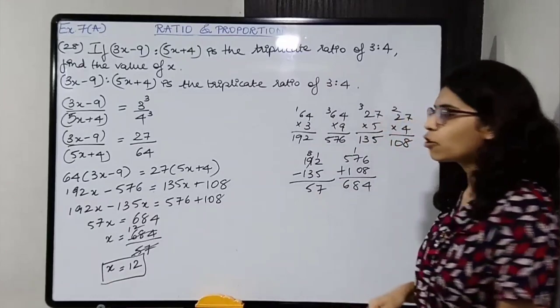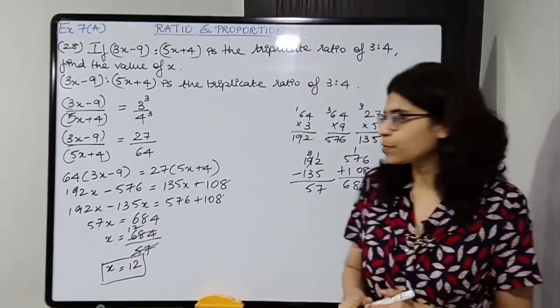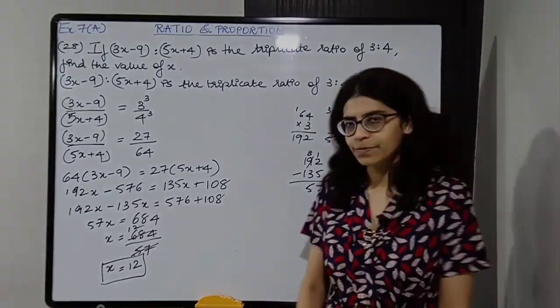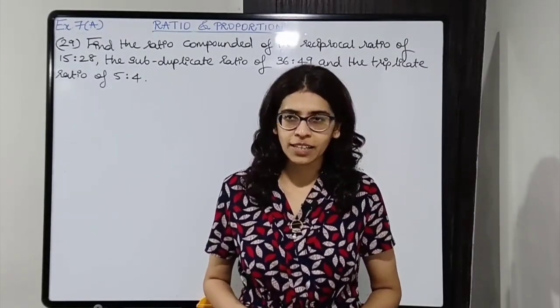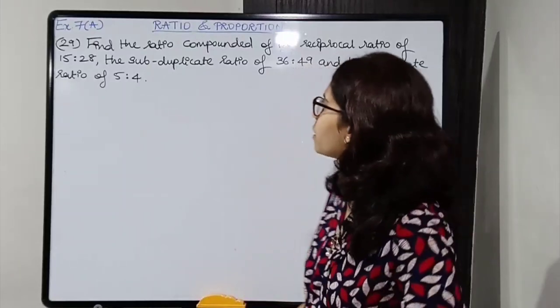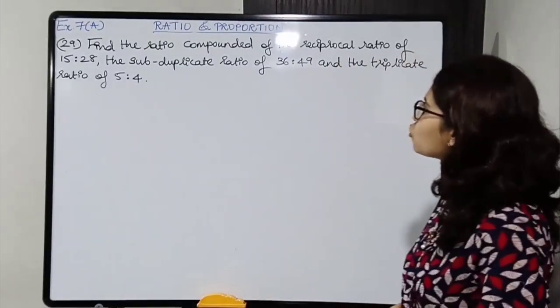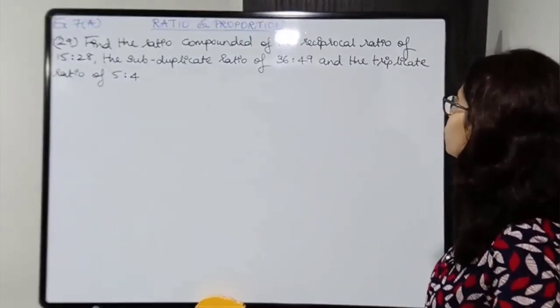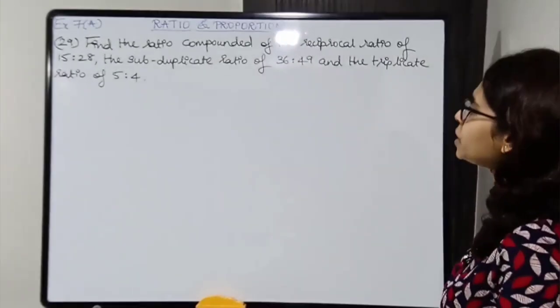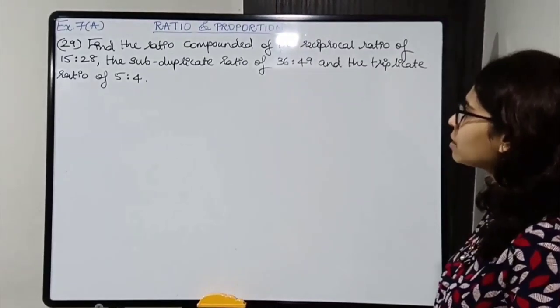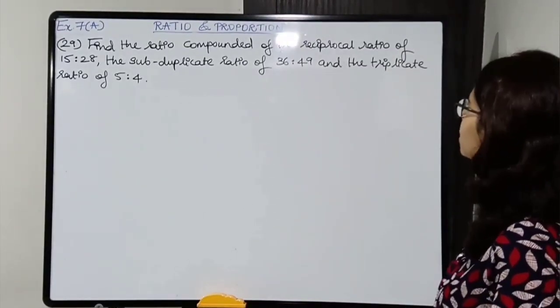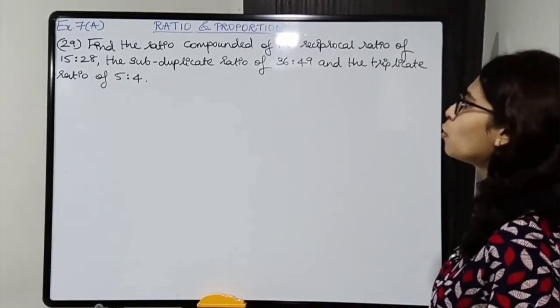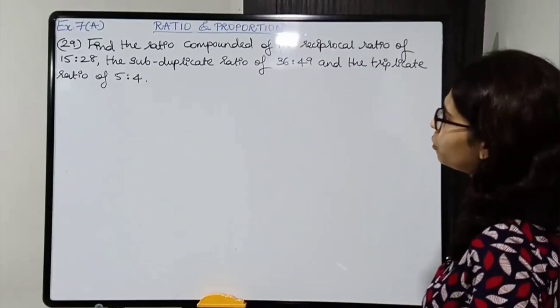Box the value. Next question — question number 29. Find the ratio compounded of the reciprocal ratio of 15 is to 28, the subduplicate ratio of 36 is to 49, and the triplicate ratio of 5 is to 4.